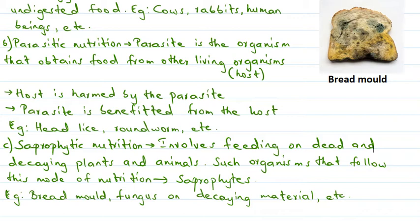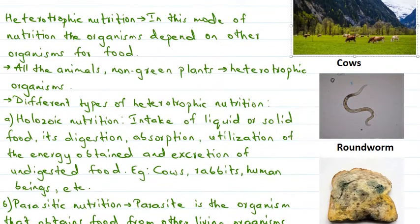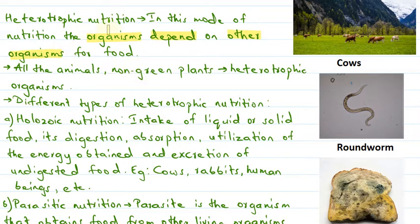Let's quickly revise what we have studied. Heterotrophic nutrition is a mode of nutrition in which organisms do not synthesize their own food, but are dependent on other organisms for their requirement of food and nutrition. All organisms that follow heterotrophic mode of nutrition can be called heterotrophs. All animals as well as non-green plants are examples of heterotrophic organisms.